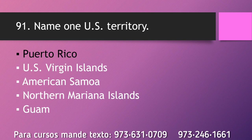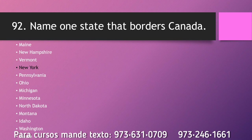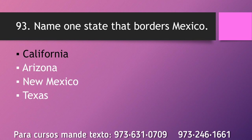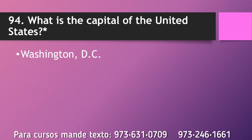Name one U.S. territory. Puerto Rico. Name one state that borders Canada. New York. Name one state that borders Mexico. California. What is the capital of the United States? Washington D.C.